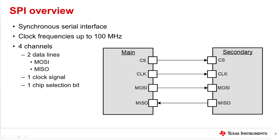SPI is not defined by a formal standard, so protocol options may vary by application and devices used. Clock frequencies and data speeds may vary up to 75 to 100 MHz.